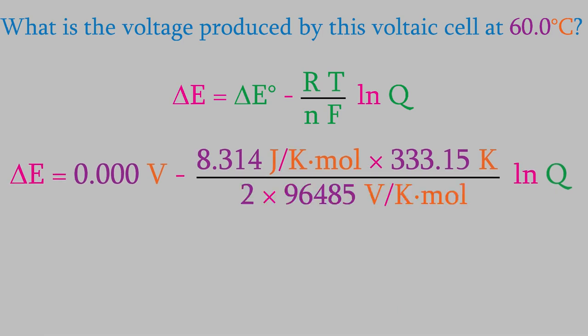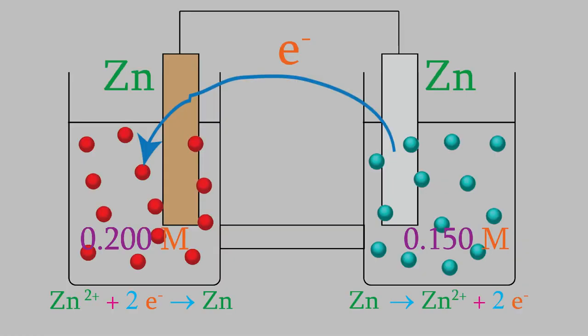That just leaves us with Q to figure out. Q is the reaction quotient, which is reactants over products. And as you can see in the overall reaction, the reactants are the zinc metal of the anode and the zinc solution of the cathode. Meanwhile, the products are the zinc metal in the cathode and the zinc ions in the right-hand beaker. So, the equation for Q is this.